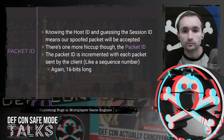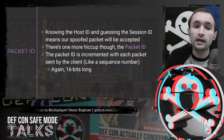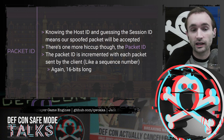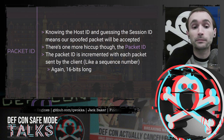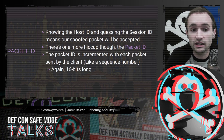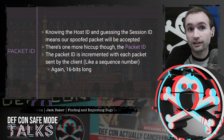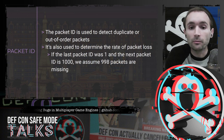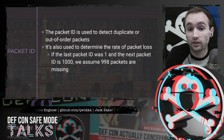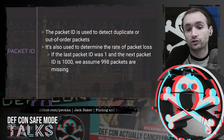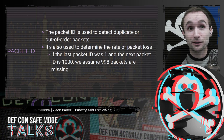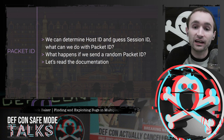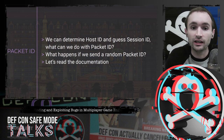So if we know the host ID and can guess the session ID, that's all we need for our spoofed packet to be accepted within another player's session. There is one more hiccup: the packet ID. The packet ID is a 16-bit integer incremented with each packet sent by the client — basically a sequence number. It's used to detect duplicate or out-of-order packets since UDP doesn't handle that, and also to determine the rate of packet loss. If the last packet ID received was 1 and the next one is 1000, the server assumes it lost 998 packets in between.